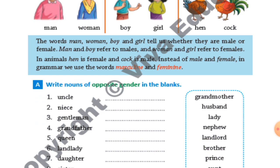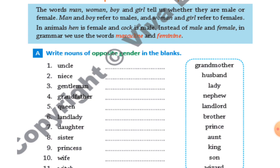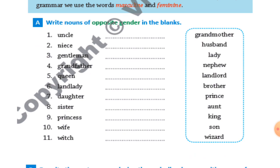Write the nouns of opposite gender in the blanks. Opposite means — uncle, so the opposite of uncle is aunt. Then niece, opposite is nephew. Nephew and niece are the children of your uncle or auntie. Gentleman, opposite is lady. Grandfather, opposite is grandmother. Queen, opposite is king. Landlady, opposite is landlord. If someone owns a house, they can be male or female — we call them landlord or landlady, and they give it on house rent.